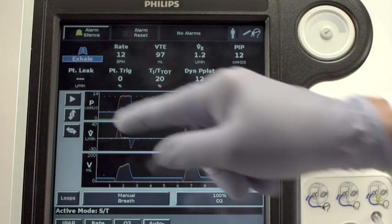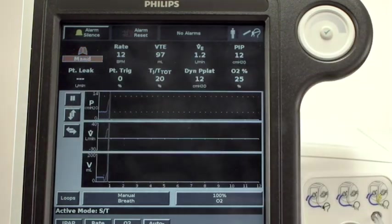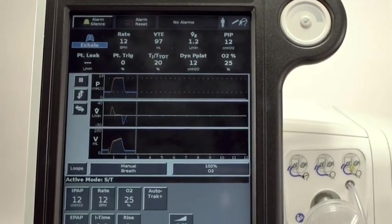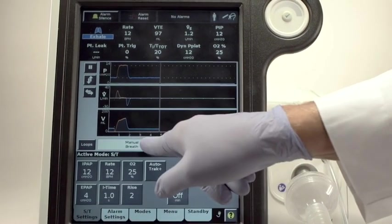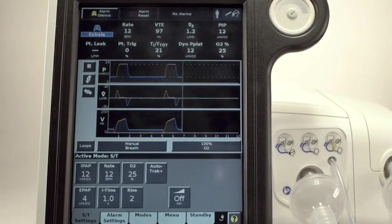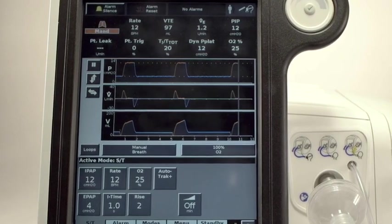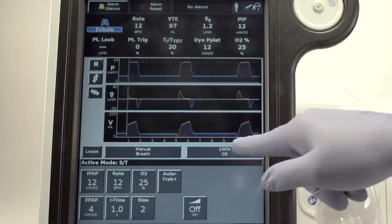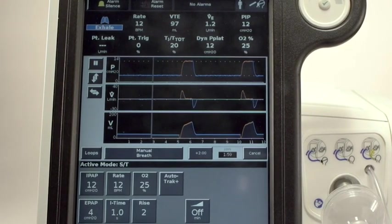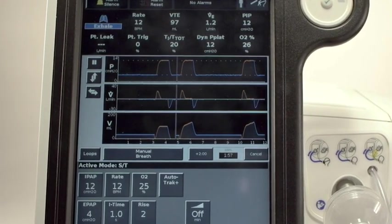Only one breath is given when the manual breath button is touched, and then only after the minimum expiratory time of 300 milliseconds has elapsed. This is to help prevent breath stacking. When the 100% O2 button is touched, the prescribed O2 percentage is increased to 100% for 2 minutes.